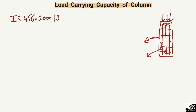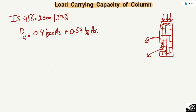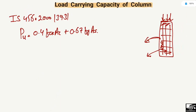In clause 39.3, they recommend this equation: PU = 0.4·FCK·AC + 0.67·FY·AS. This equation is used to find the load carrying capacity of the column, where PU is the load carrying capacity of the column.